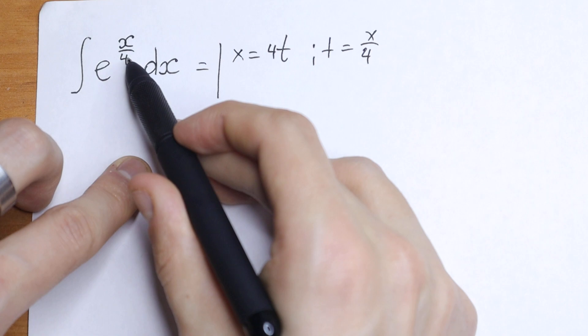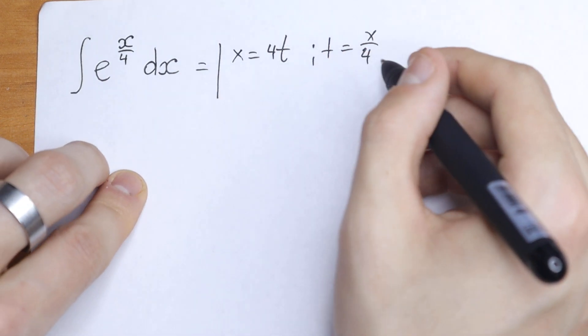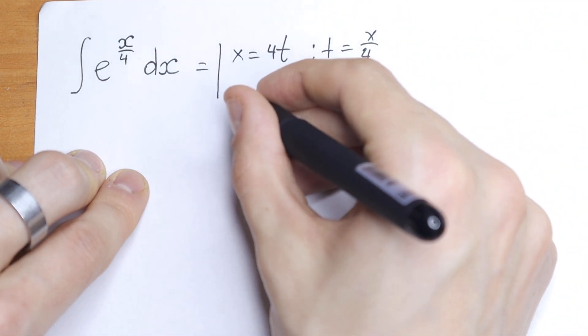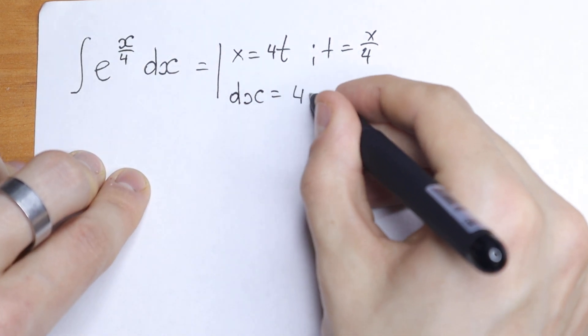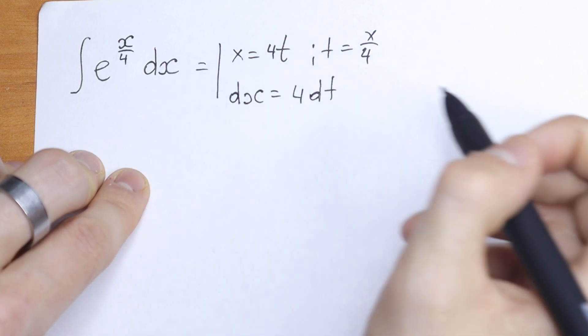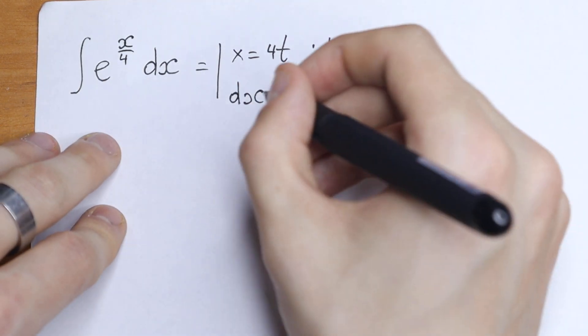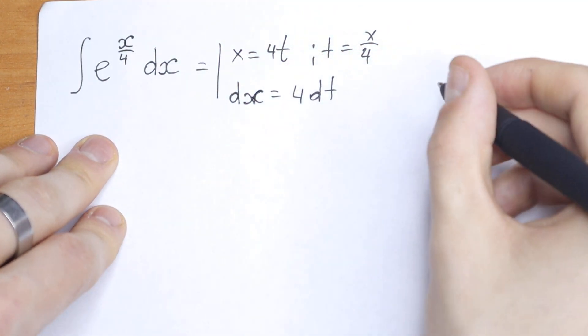So this is equal to t, then x equal to 4t, and we need to find dx. Taking the derivative, dx equals 4 dt.